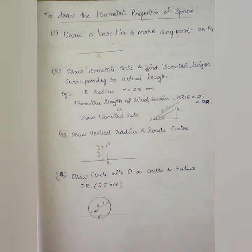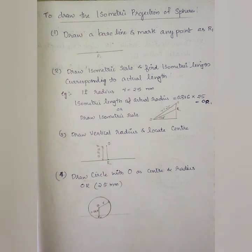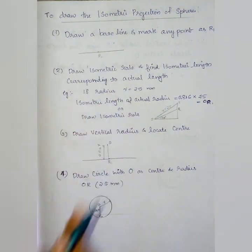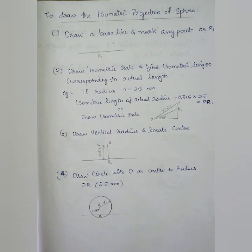Next topic is to draw the isometric projection of a sphere. A sphere is not as easy as its front view, top view, or side view — the isometric view is all circles. Isometric projection is used as a baseline. Draw a baseline with a point R1. We have a circle with 25mm radius.